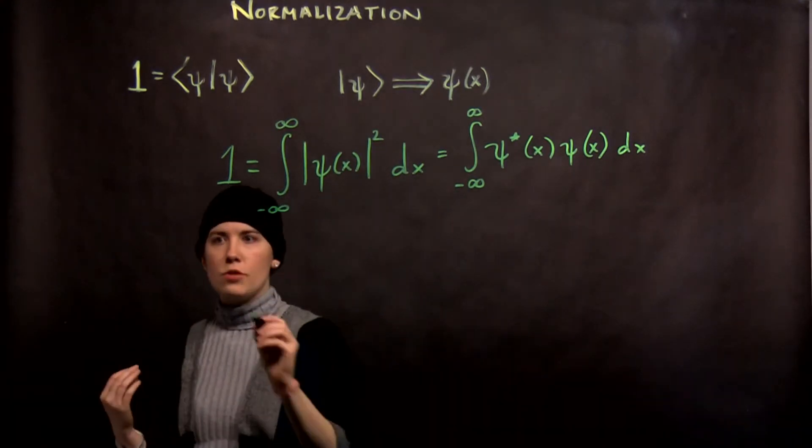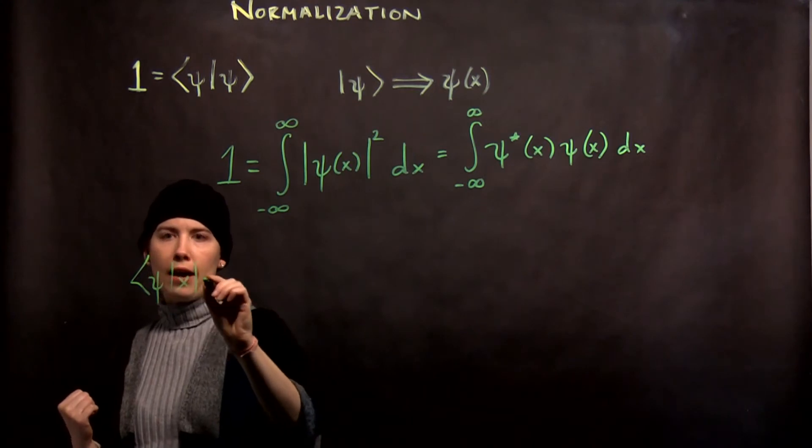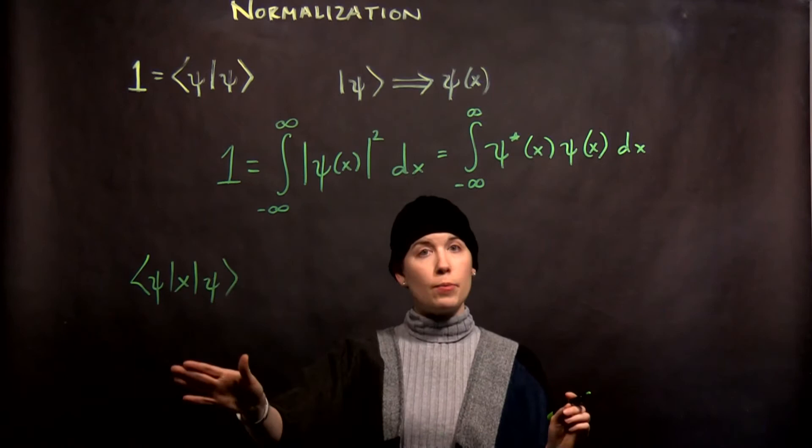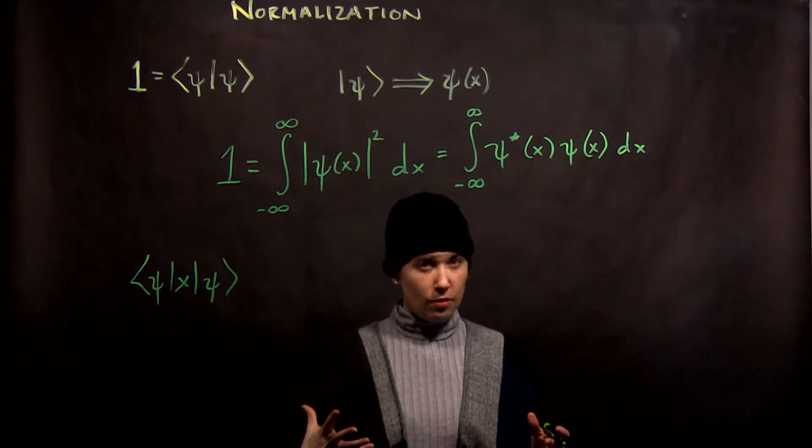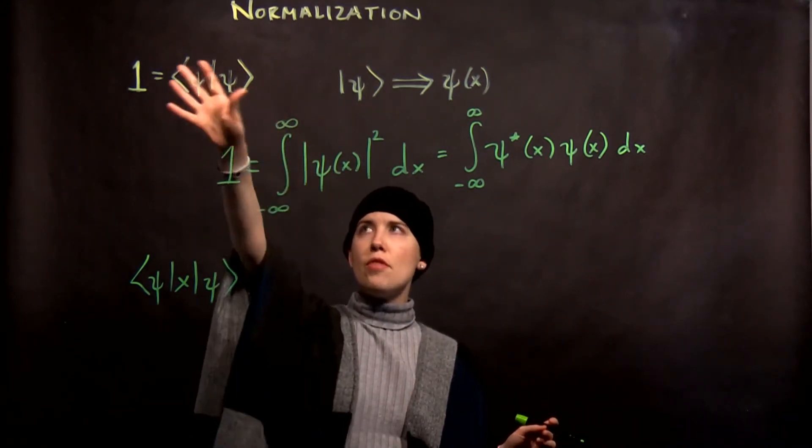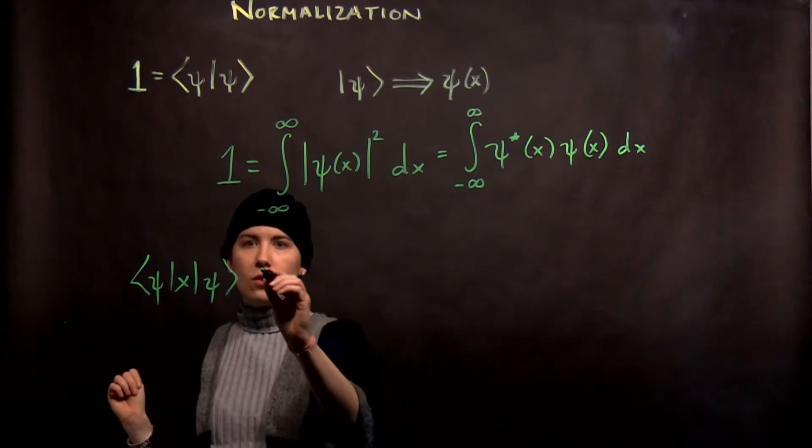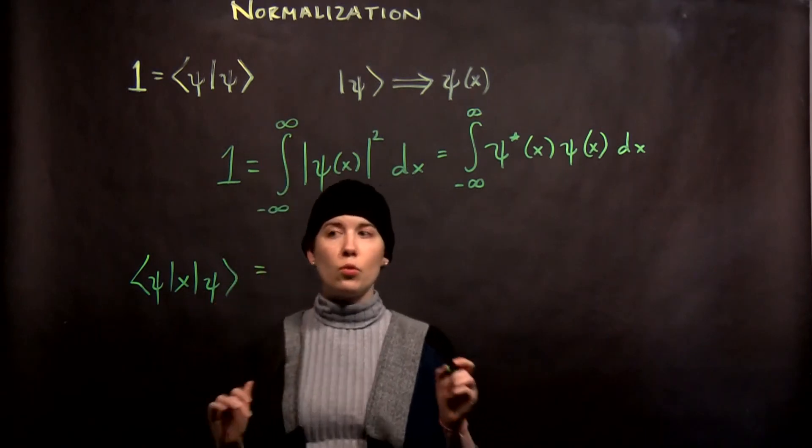Now what about expectation value? I introduced the idea that we might have a quantity like this. What is the expectation value of position? Now again, these need to be functions of position. But we can look at how we transform this to take a guess of what this is going to look like. And in fact, we're again going to have an integral.